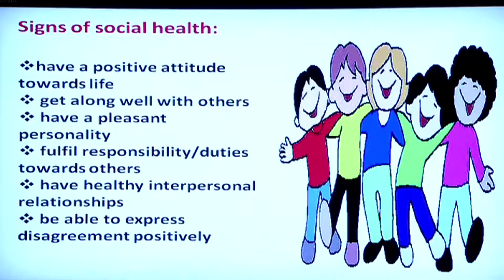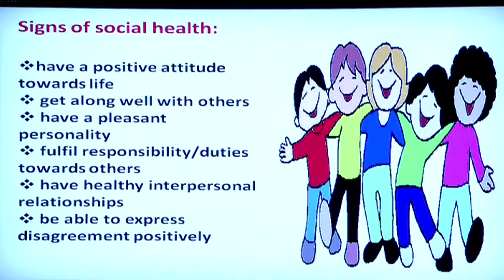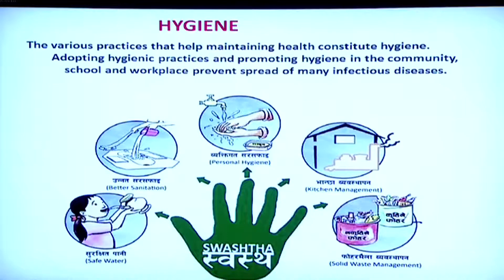A socially healthy person is recognized by a positive attitude towards life — they will not be expecting everything they see around them, but will judge their own abilities and capacities and set their desires accordingly. They will get along well with others, have a pleasant personality, fulfill responsibilities and duties towards others, have healthy interpersonal relationships, and be able to express disagreement positively instead of fighting. The various practices that help maintain health constitute hygiene.